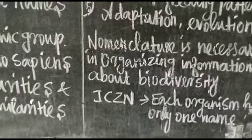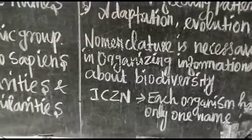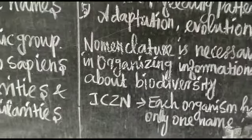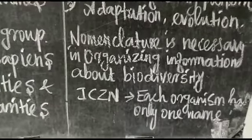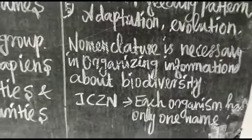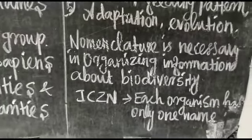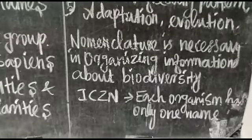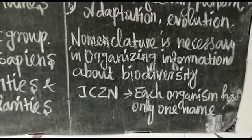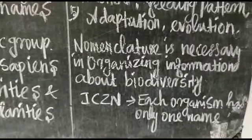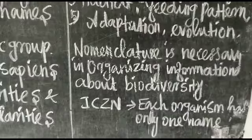The naming function of nomenclature provides names for all taxa at all levels in the hierarchy of life — the taxonomical hierarchy includes kingdom, phylum, class, order, family, genus, and species. The naming of organisms is done based on the guidelines of the International Code for Zoological Nomenclature.